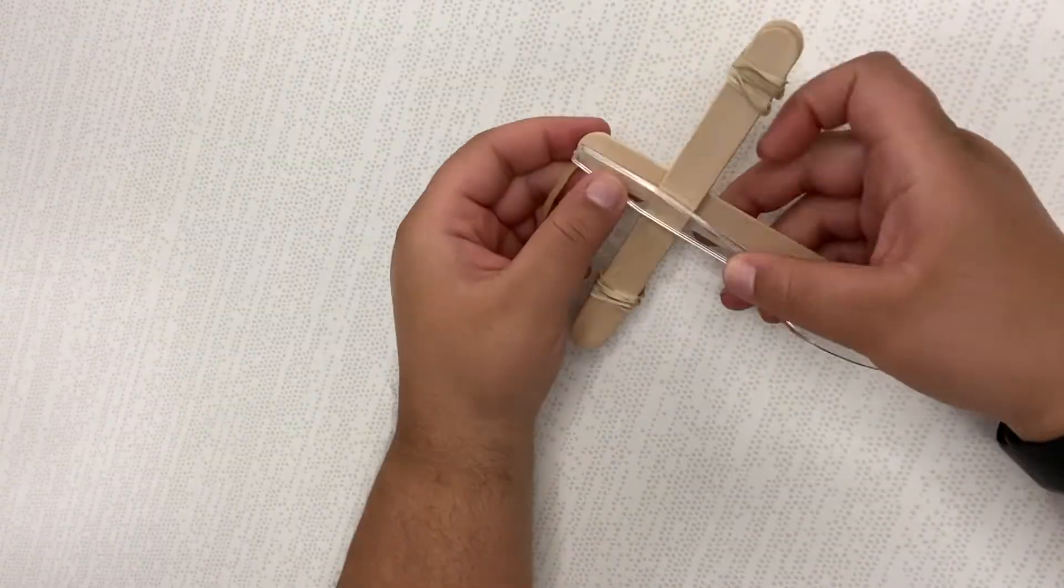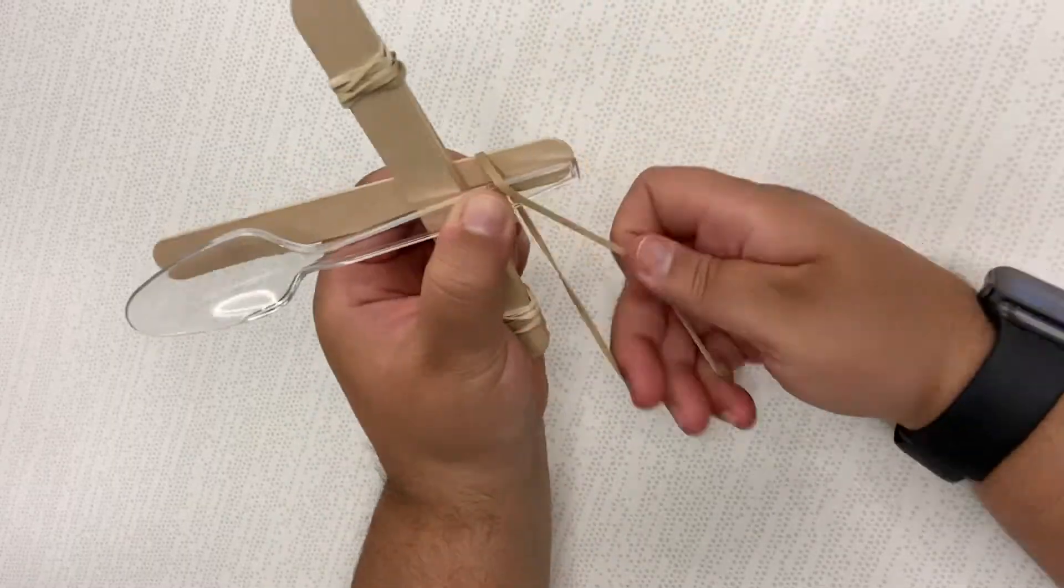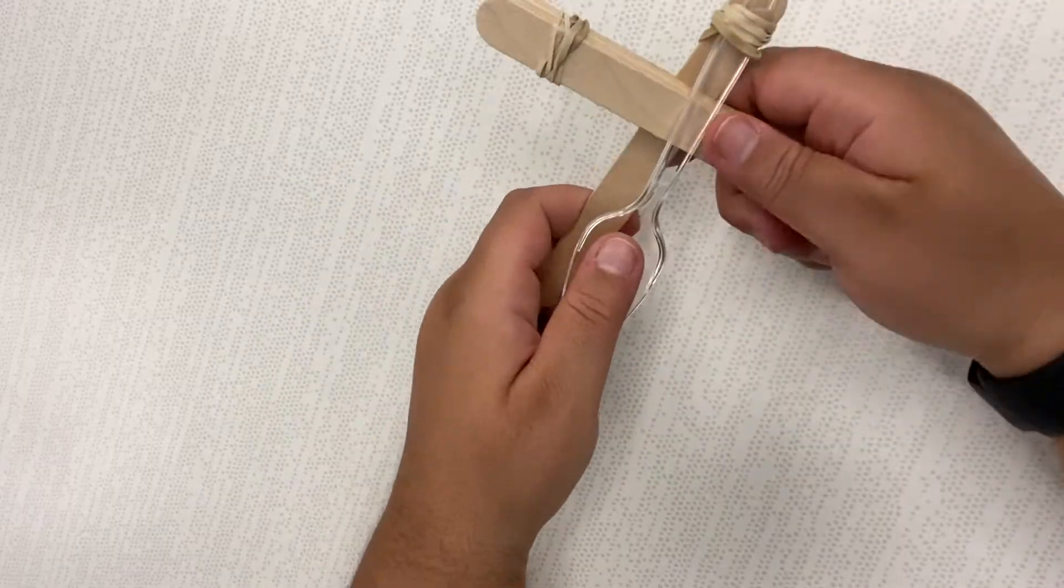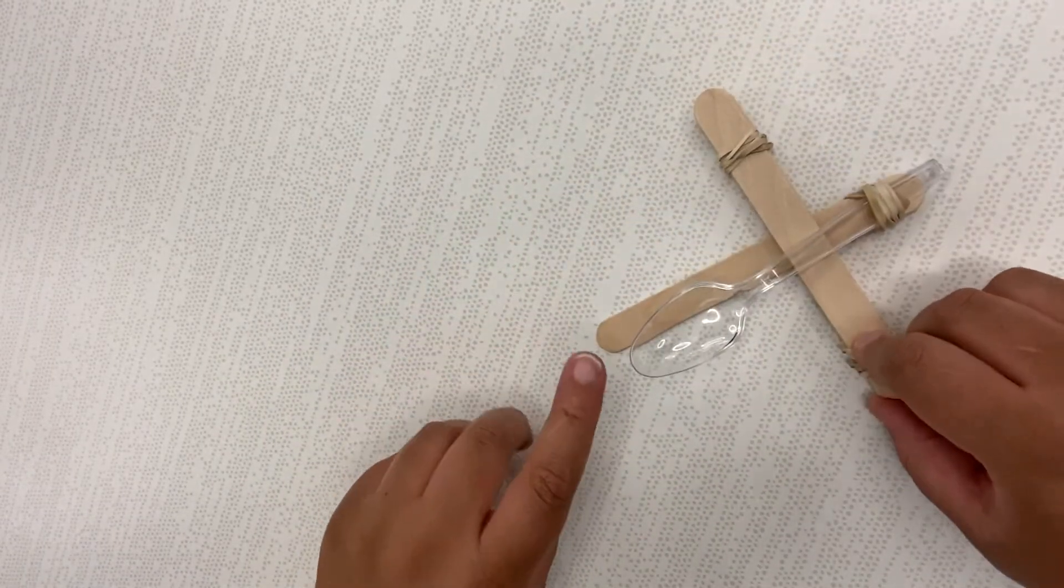Lay the spoon on top of the stack and secure the spoon and the stick together with the last rubber band. Voila! We have our first catapult.